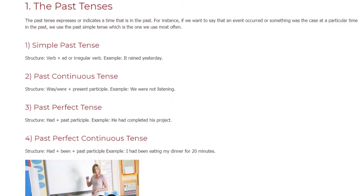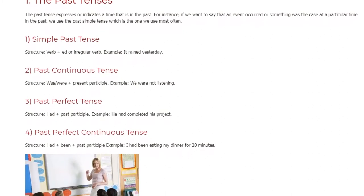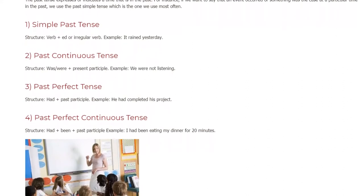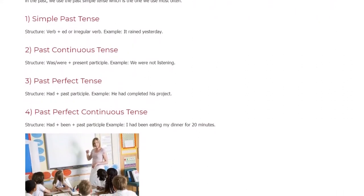4. Past Perfect Continuous Tense. Structure: Had plus Been plus Past Participle. Example: I had been eating my dinner for 20 minutes.